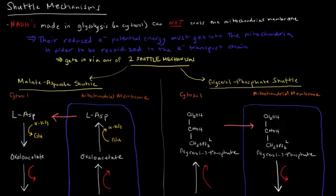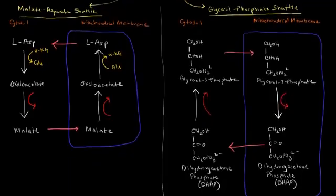So the NADHs made in glycolysis, which happens in the cytosol, they cannot cross the mitochondrial membrane. Their reduced electron potential energy needs to get into the mitochondria so that they can be re-oxidized by the electron transport chain to make ATP. We need to get these NADHs somehow into the mitochondria, but the NADHs can't cross the mitochondrial membrane. So how do we get their reduced potential energy into the mitochondria? Well, the way we do that is via one of these two shuttle mechanisms.